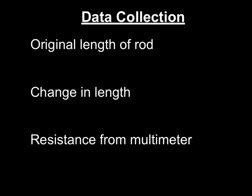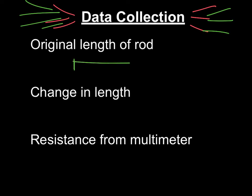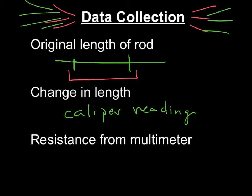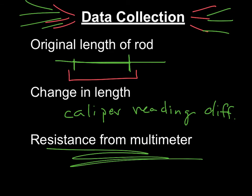Now for the moment you've all been waiting for, data collection, where you get numbers, and you get to use formulas, and you get to see how the world works. Huzzah. Okay, so just remember, your original length of the rod, if these are your clips, so your rod goes this way, you measure to the outside of the clips, right next to it. Your change in length comes from your caliper reading difference. And then your multimeter tells you the resistance. And then you'll have to interpolate it.